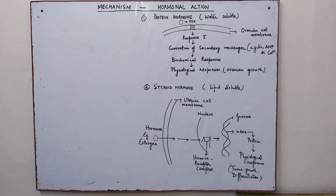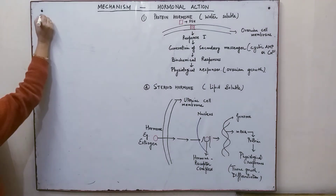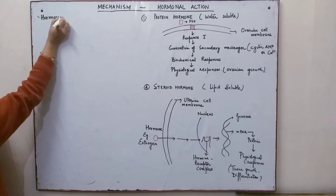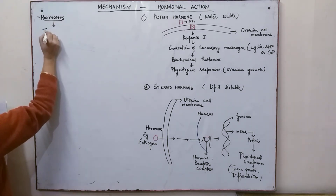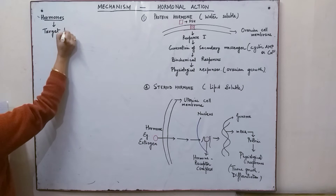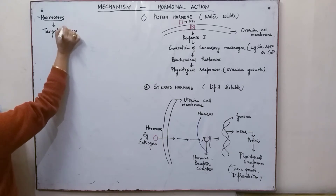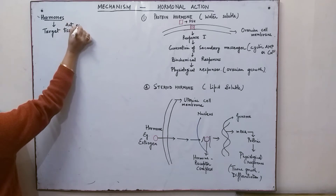Today we'll try to understand the mechanism of hormonal action, or how hormones act on target organs and bring about physiological changes. Hormones are produced by the endocrine glands and are directly released into the bloodstream. They are very specific, meaning they act on specific target organs only, and as a result they bring about certain physiological changes.